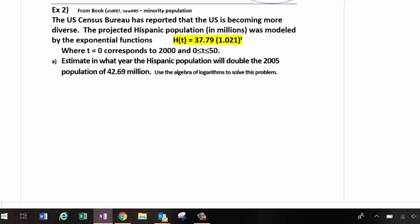The U.S. Census Bureau reported that the U.S. is becoming more diverse. The projected Hispanic population in millions, so remember we always have to be careful about our units, was modeled by the exponential function H(t) equals 37.79 times 1.021 to the t. Zero corresponds to year 2000 and we're only concerned between zero and 50 for my time. We want to estimate when it will double the 2005 population of 42.69. So they got a lot of extra numbers in here, but if we want it to double, we're not doubling the original. That's where you got to be careful. We're doubling the amount in 2005, which means I am doubling this amount.